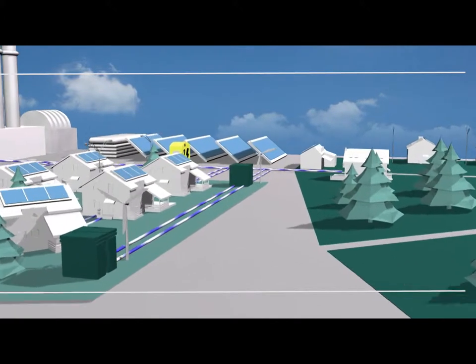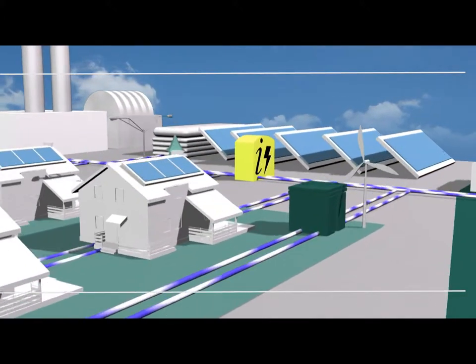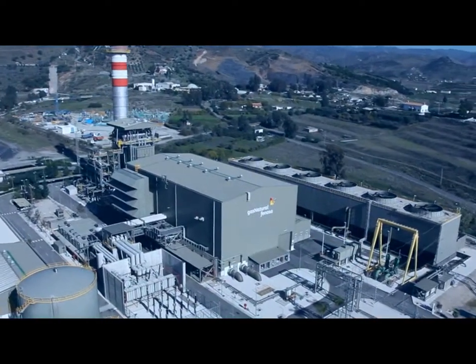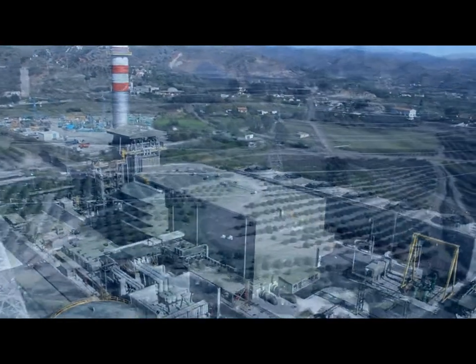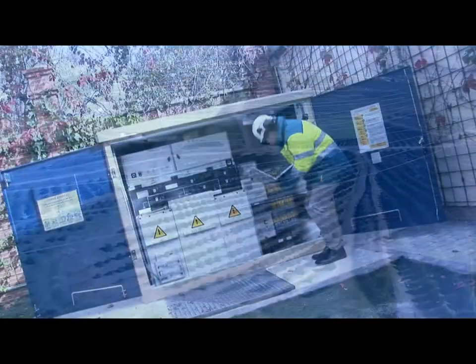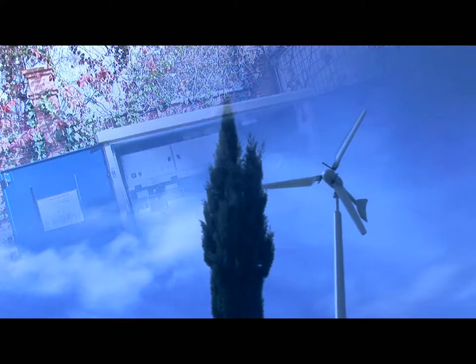The greater automation of the distribution networks mean they will be able to manage more complex systems and elements. This will open the door, for example, to a larger scale deployment of distributed generation plants, such as micro-cogeneration, small wind energy and photovoltaic power.